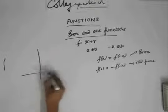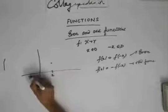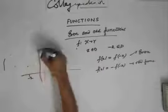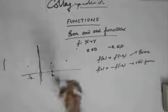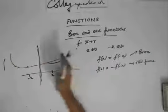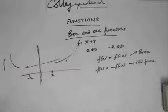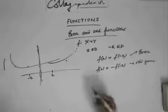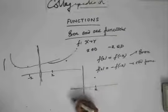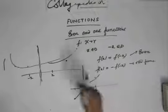Graphically, for an even function, f(x) equals f(minus x) means that for x and minus x the values are equal — the function is symmetrical about the y-axis. If you take the mirror image of the right-hand side, you get the same on the left. For an odd function, for x you get one value and for minus x you get the opposite value, so it is symmetrical about the origin.